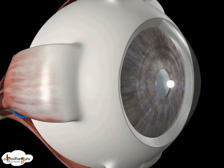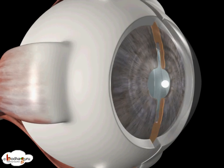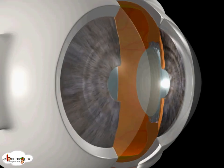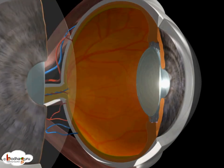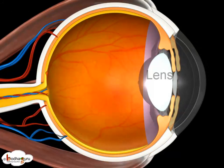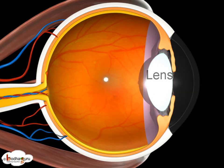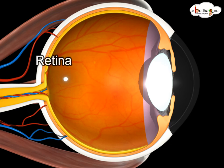Light passes through the pupil and refracts through the lens to form an image of the object on the retina, which is made of light-sensitive cells.